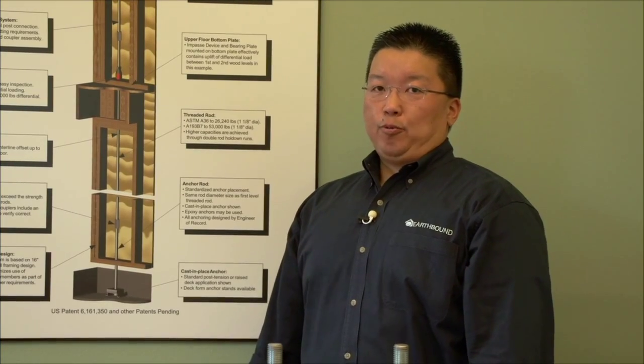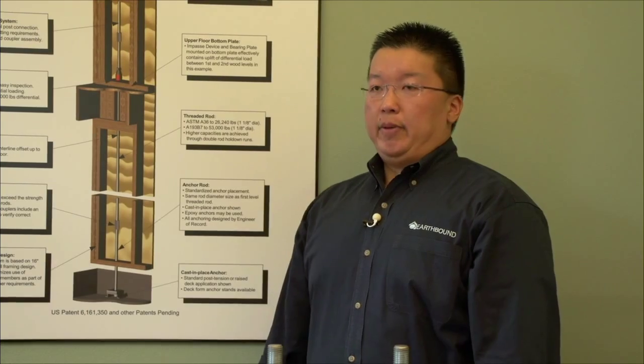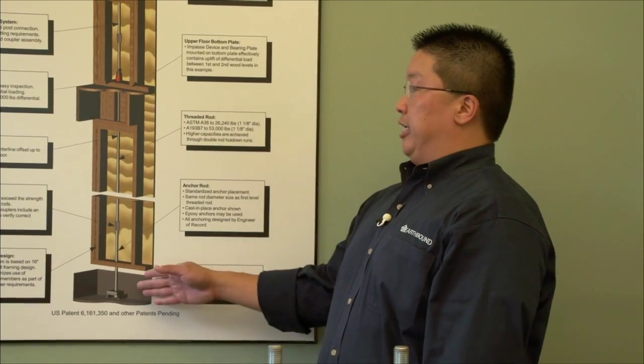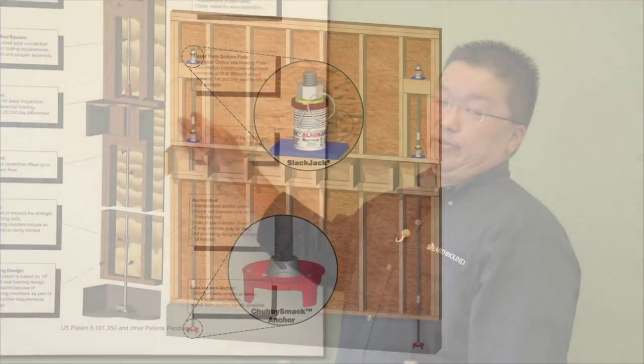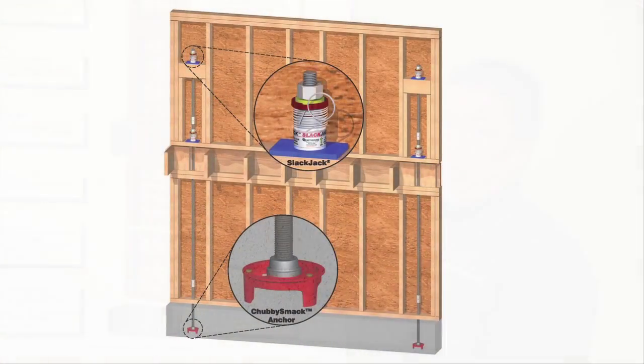The purpose of a continuous tie rod system is to help a mid-rise structure resist overturning during a high wind or seismic event. The tie rod system works by running a continuous rod all the way up both ends of a typical shear wall.